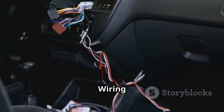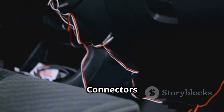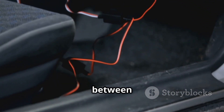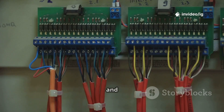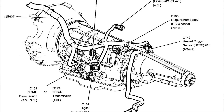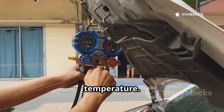Transmission wiring harness and connectors. Location: runs between the transmission, TFT sensor and PCM. Function: transmits electrical signals for accurate readings. Transmission cooler and fluid lines. Location: connected to the radiator or a separate transmission cooler. Function: regulates transmission fluid temperature.